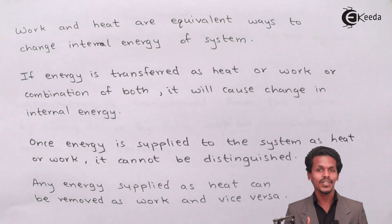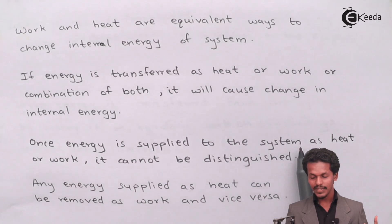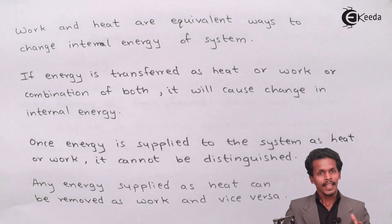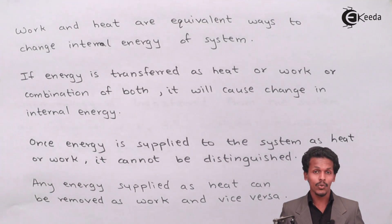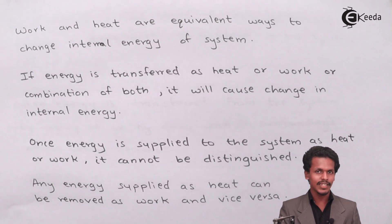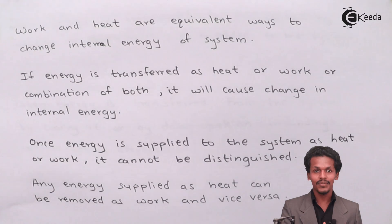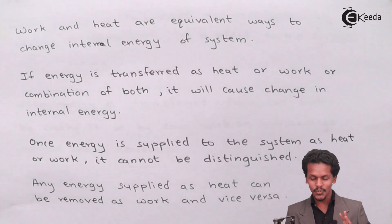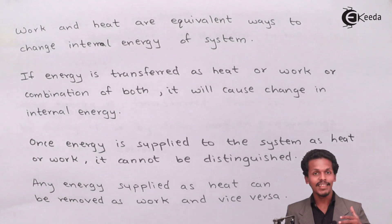Once energy is supplied to the system as heat or work, it cannot be distinguished. A system has a particular internal energy, but we don't know what kind or how much. However, if we provide heat or work, that changes the internal energy — but once that energy has been mixed into the internal energy of the system, we cannot distinguish what kind of energy it originally was.